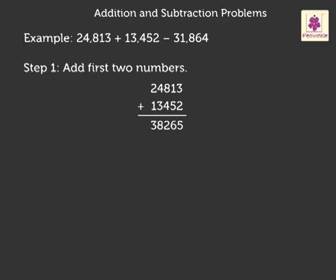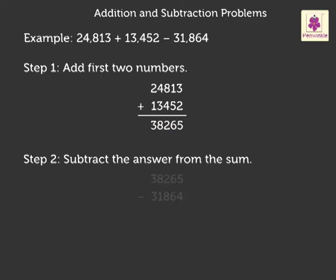Now, we will move to step two. That is, subtract the third number, 31,864, from the sum of the first two numbers, 38,265, like this.